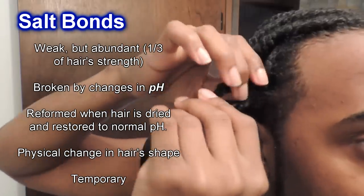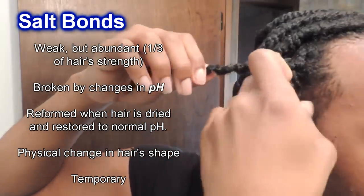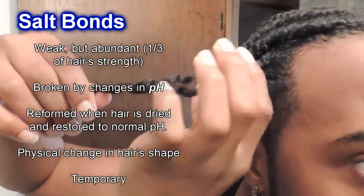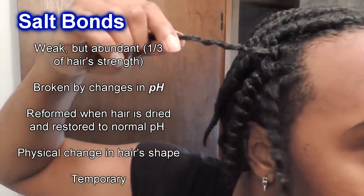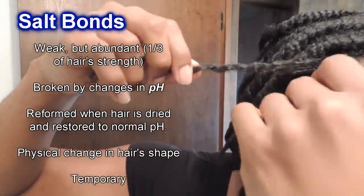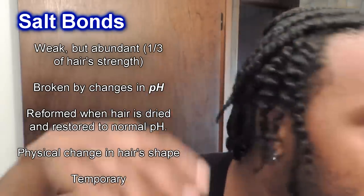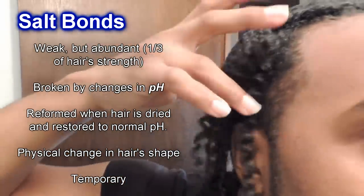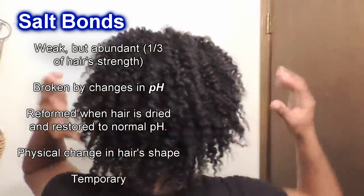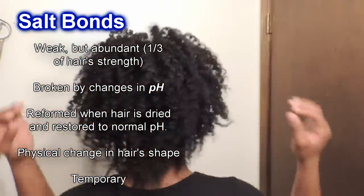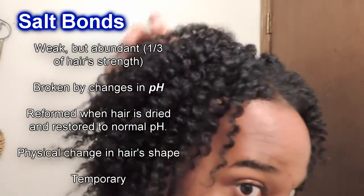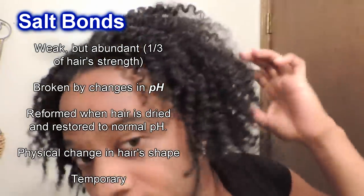When more acidic solutions are placed on the hair, it causes the hair to harden, shrink, and encourages the cuticles to contract and close. This is the underlying concept behind products with hold — the products alter the pH of hair and help to set our hairstyles and give it hold. Once the hair is dried and restored to its normal pH balance, the bonds are reformed and lock the hair in place. Changes in salt bonds are considered a physical change and are temporary as well.